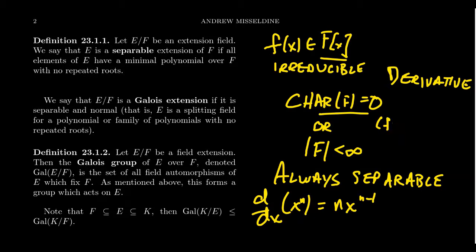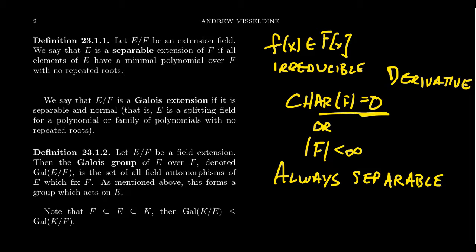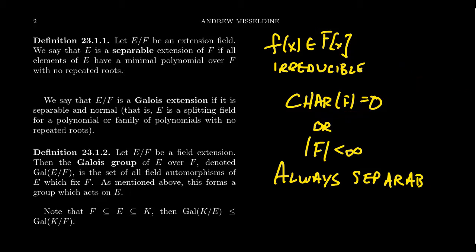The derivative can be used for any polynomial ring whatsoever. For a field of characteristic zero, the derivative is a linear map with a kernel — all polynomials whose derivative is zero. In characteristic zero, the only polynomials mapping to zero under the derivative are constant polynomials. Using the product rule, you can show a polynomial has a repeated root if and only if that repeated root divides both the polynomial and its derivative.